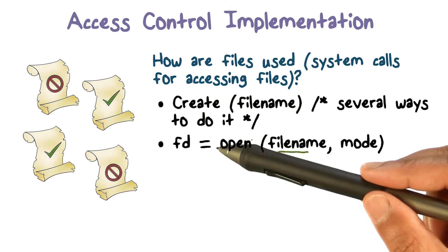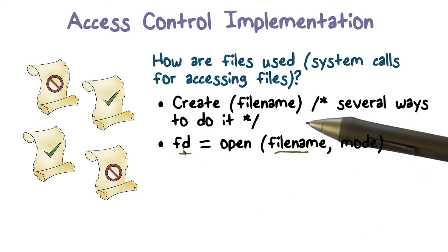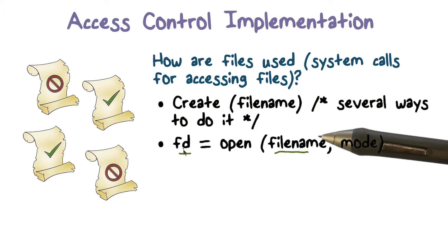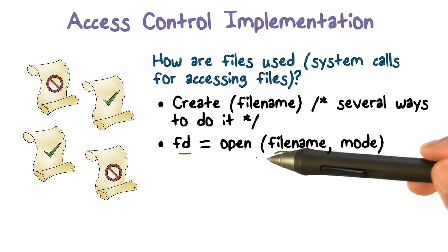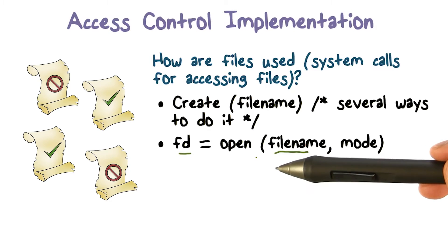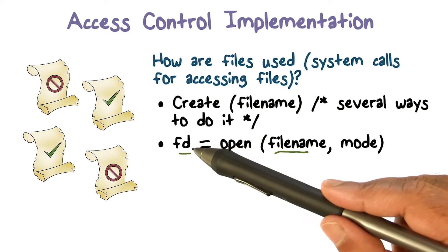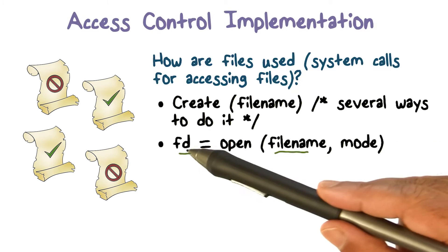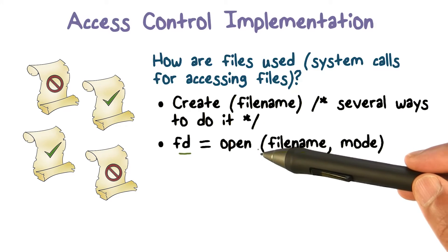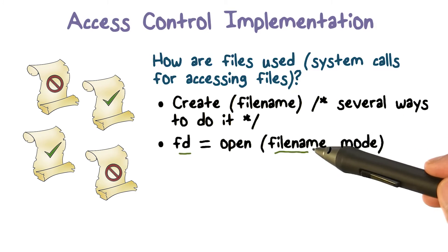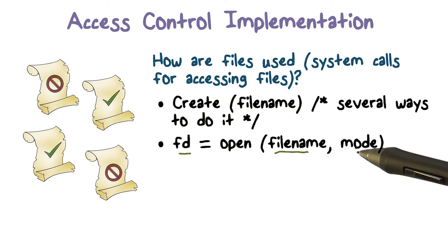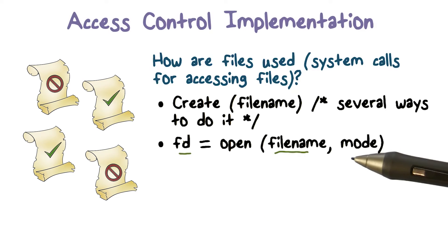Once a file exists, the first thing we do is open it. When you open it, the operating system returns you a file descriptor, which is a small number. To be able to access or get the data that's in the file, or write it into the file, we're going to need the file descriptor. So the descriptor comes when you open the file — you prep it or get it ready for access. You make a system call saying: this is the file I want to access, this is how I access it. The operating system prepares the file and returns you this file descriptor that you then hold on to.